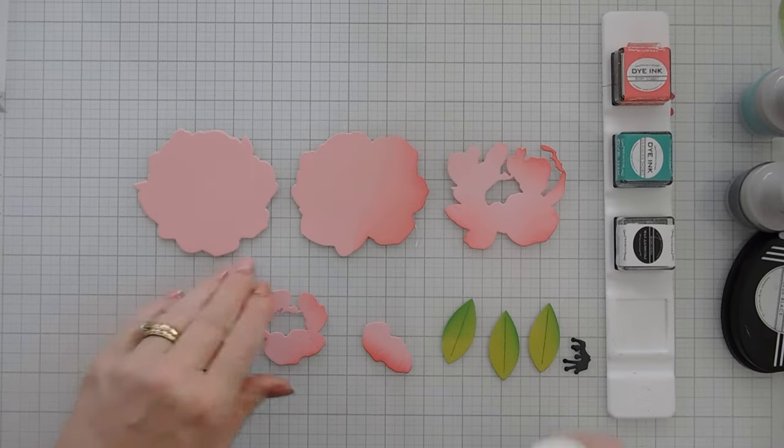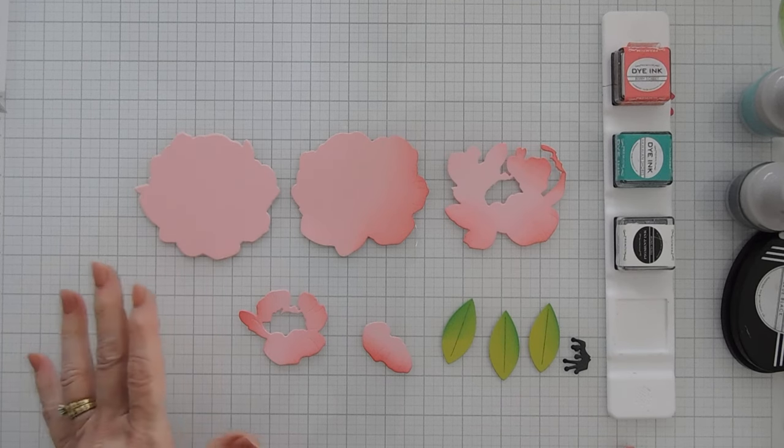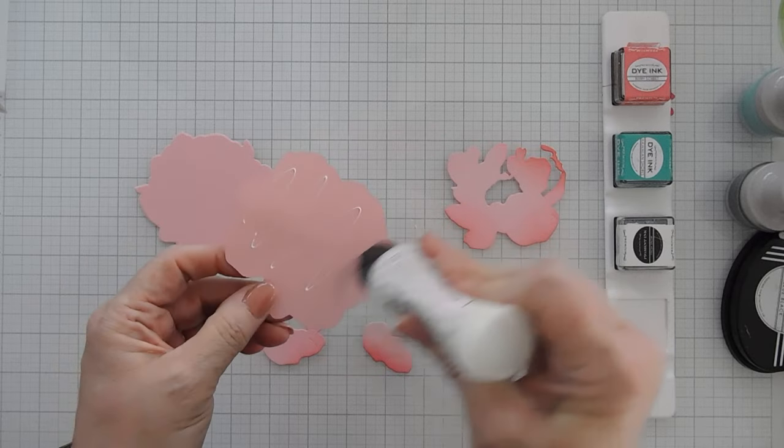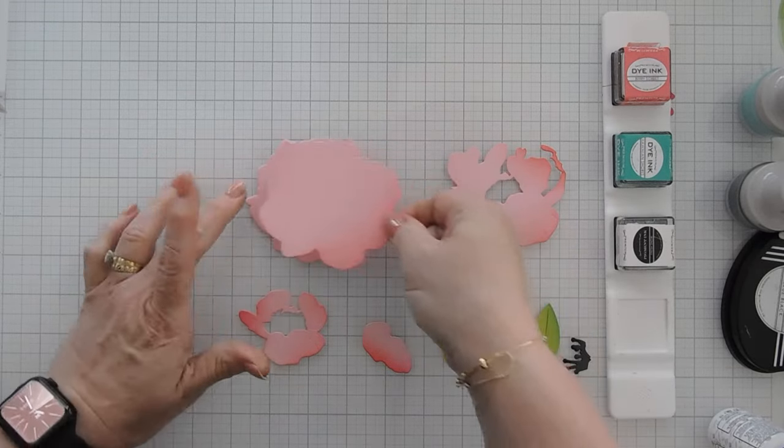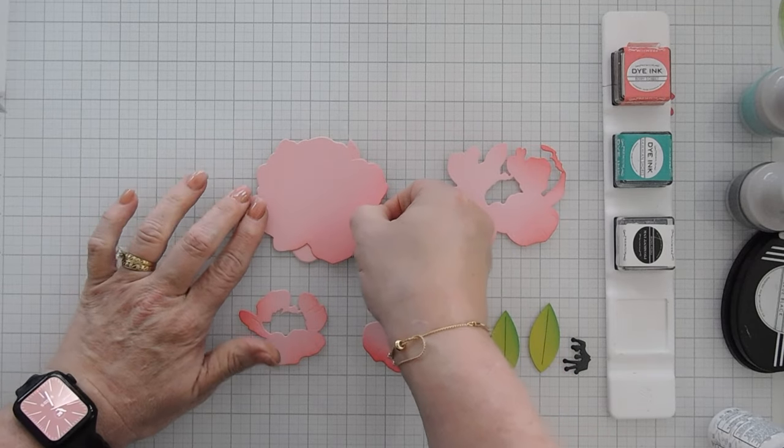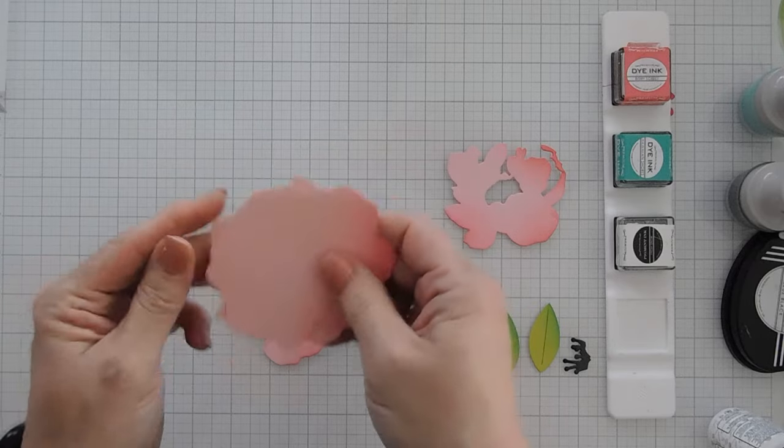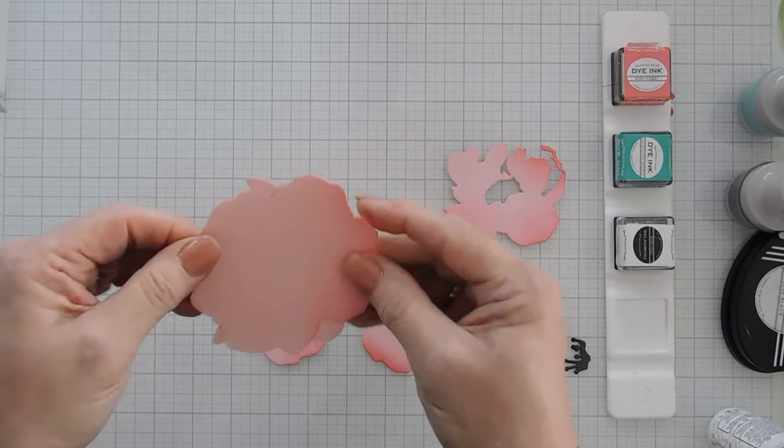Once our ink blending is done, we can now layer it. This is the base layer. We didn't do any blending on. I'm going to take this layer. We're going to add some glue behind here and then I'm going to layer these two together. What I suggest doing is looking for a key point and on this flower for me, this petal right here is my key point. They line up beautifully.